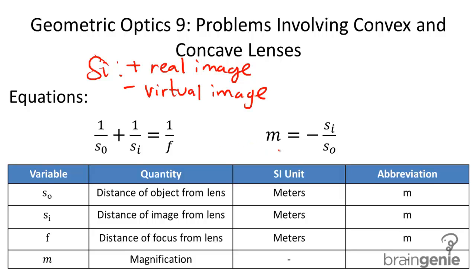And then in addition, we have the magnification equation, which is the same magnification equation that we saw with mirrors. And this is negative SI over SO.